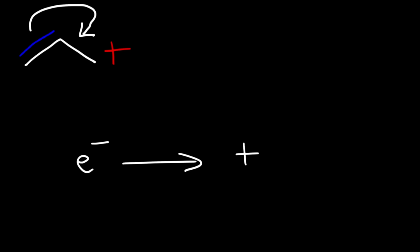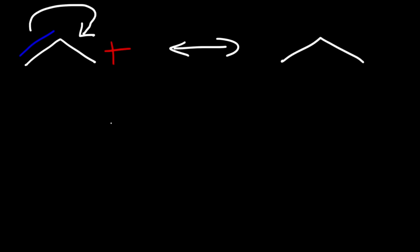The arrow is always going to go from the nucleophilic region of the molecule to the electrophilic region of the molecule or ion. The resonance structure for this allylic cation looks like this: the double bond is going to move to the right side and trade places with the positive charge. Since this carbon lost pi electrons, it now has the positive charge. This carbon lost a pi bond but regained it on the right side, so it doesn't have the positive charge.